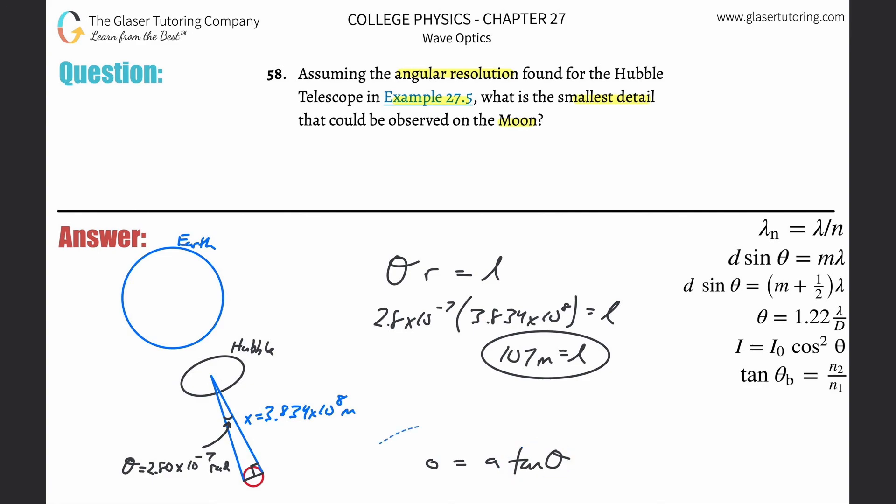Then, all you got to do is plug it in. So the opposite side is what we're looking for in black there, is going to be equal to that adjacent side, 3.834 times 10 to the 8 times the tangent of that angle of 2.80 times 10 to the minus 7th. Please make sure your calculator is in radian mode.